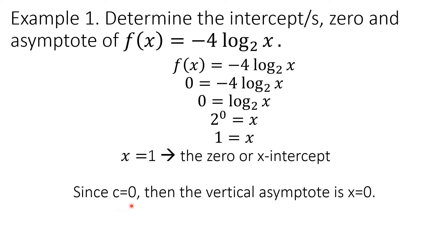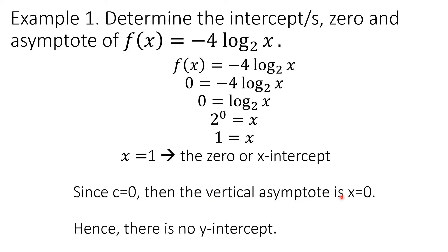Since c equals 0 — going back to the given function, the values of c and d are both 0 — the vertical asymptote is x equals 0. Since x equals 0 is the vertical asymptote, there is no point of the graph that touches or crosses the y-axis. Therefore, there is no y-intercept.